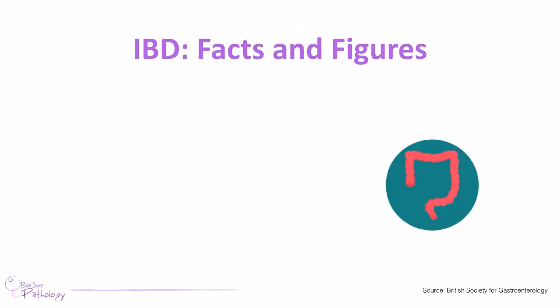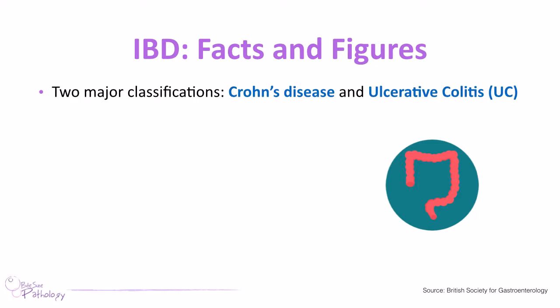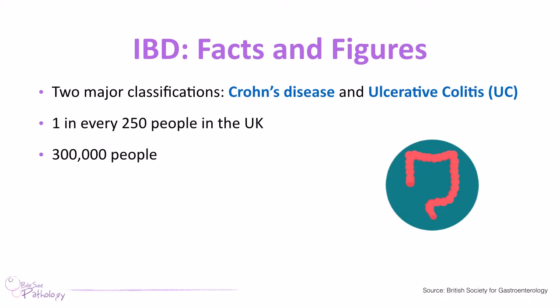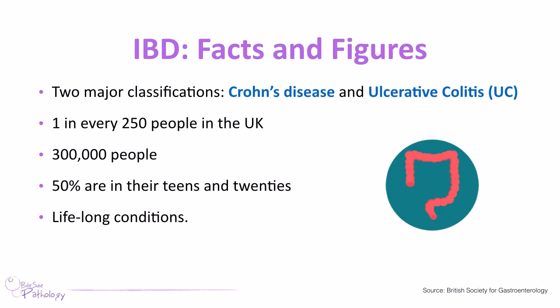To start with, we're going to look at inflammatory bowel disease. There are two major classifications of IBD: Crohn's disease and ulcerative colitis, or UC. These affect one in every 250 people in the UK, equating to about 300,000 people, and importantly about 50% are in their teens and twenties. These are lifelong conditions that account for significant morbidity and are completely life-changing. Understanding their pathology and aiming to cure these diseases is very important.